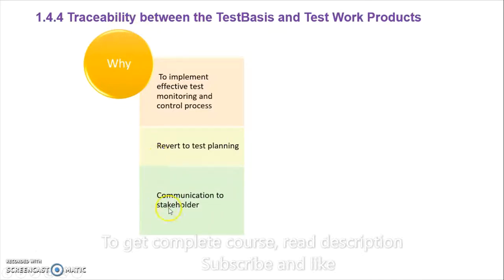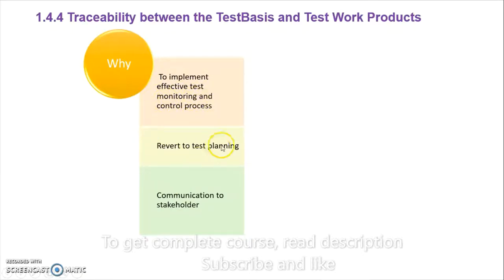The next reason is communication to stakeholders. If we have to communicate with the stakeholder, we can say we are able to cover 80% of their requirements. Based on that, the stakeholder will tell you what actions to take. That is why we need traceability to communicate with the customer, to make our monitoring phase stronger and effective, and to revert back to the planning phase if there is any problem.